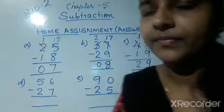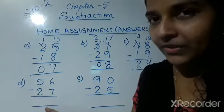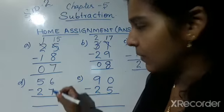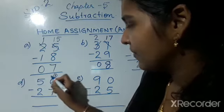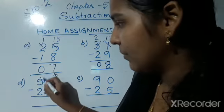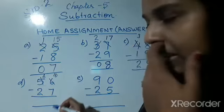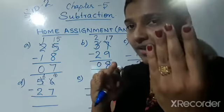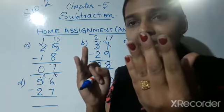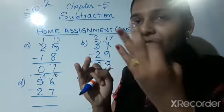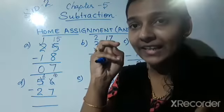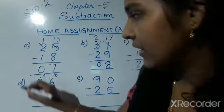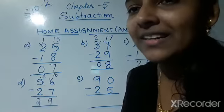Now moving to the next question: 56 minus 27. 6 minus 7 is not possible, so borrow 1 from 5 — it becomes 16 and 5 becomes 4. Now 16 minus 7: take 7 fingers and count backwards from before 16: 15, 14, 13, 12, 11, 10, 9. Write 9. Then 4 minus 2 is 2. So the answer is 29.